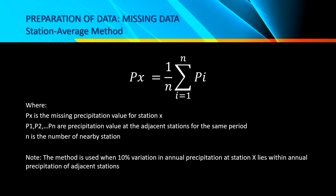For preparation of data or missing data, the first method is the station average method, with the formula: Px = (1/N) × Σ(i=1 to N) Pi, where Px is the missing precipitation value for station X, P1, P2, to PN are the precipitation values at the adjacent stations for the same period, and N is the number of nearby stations.